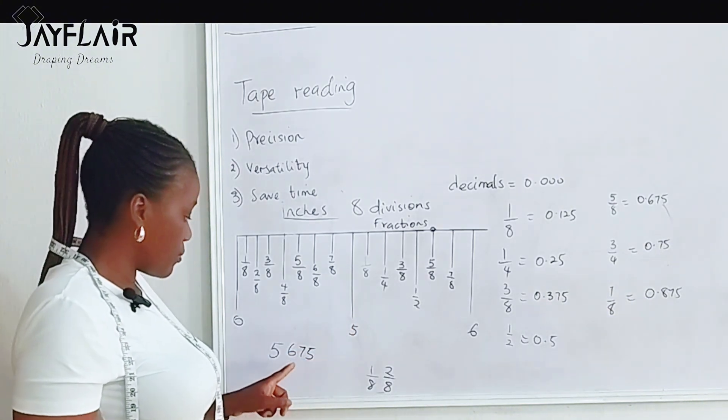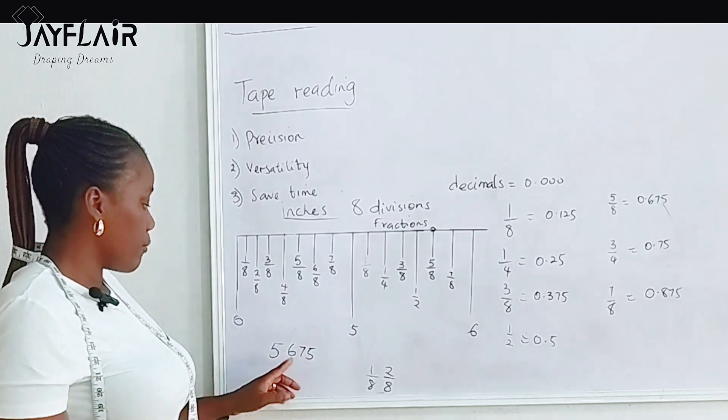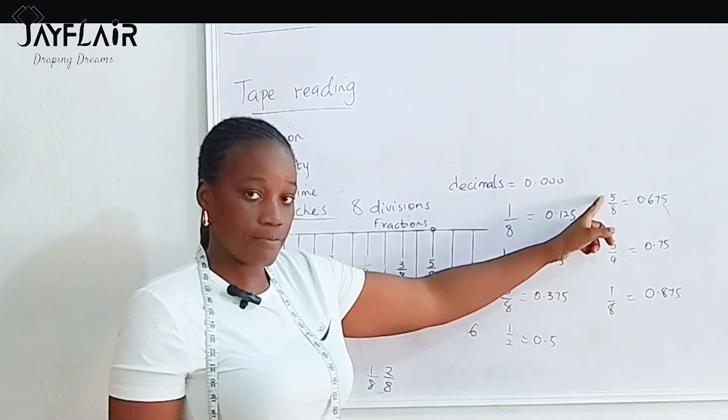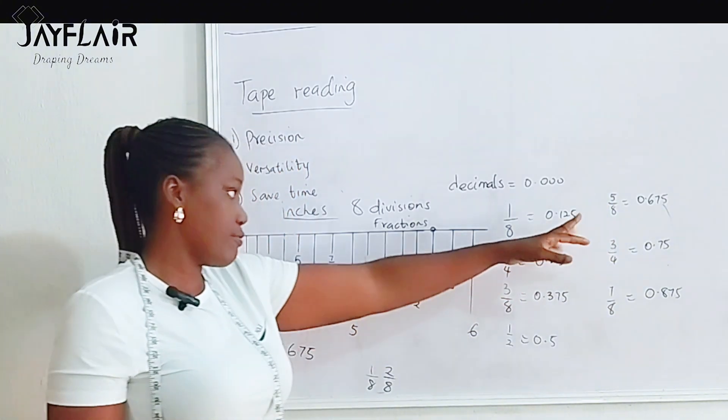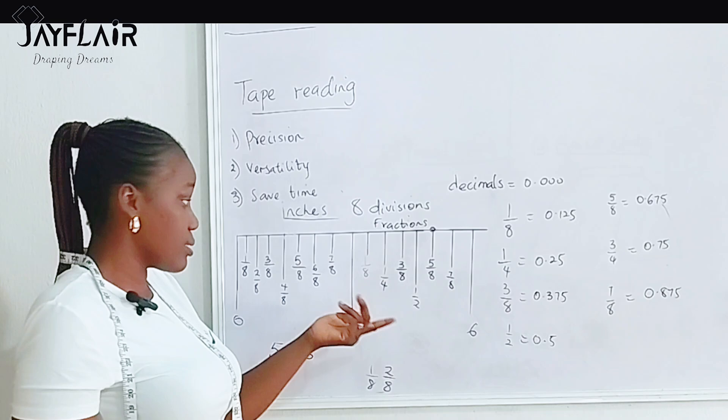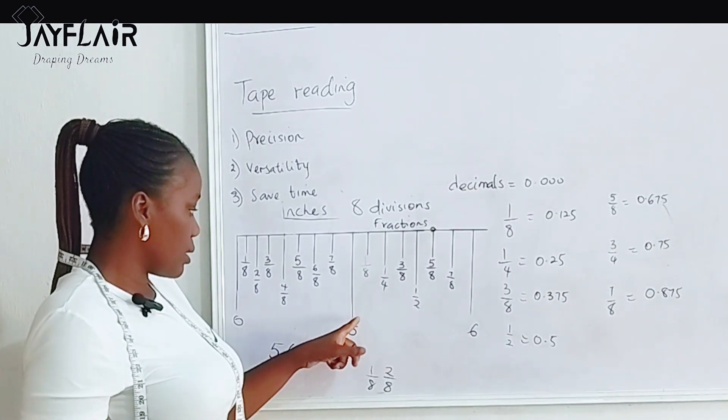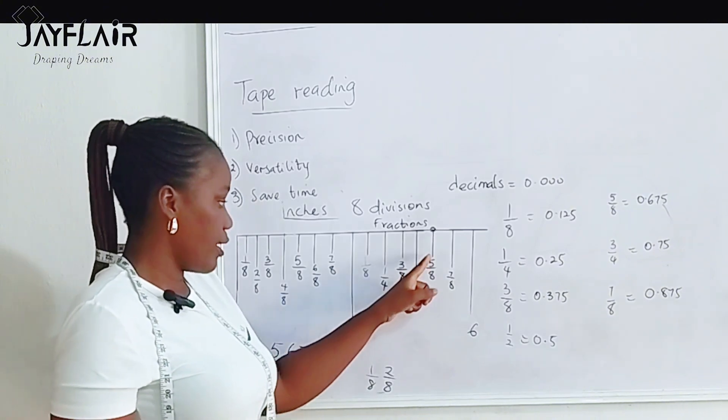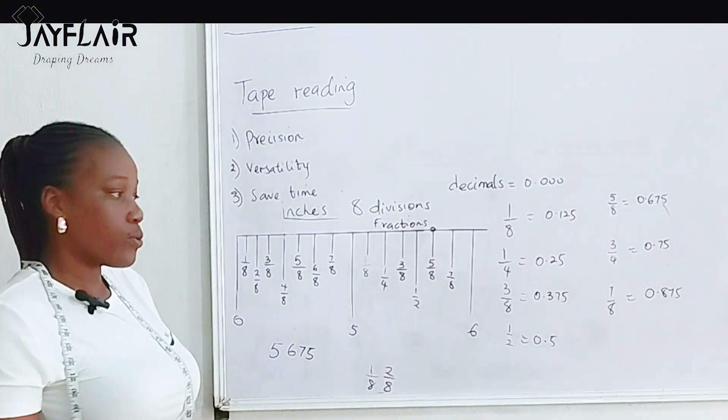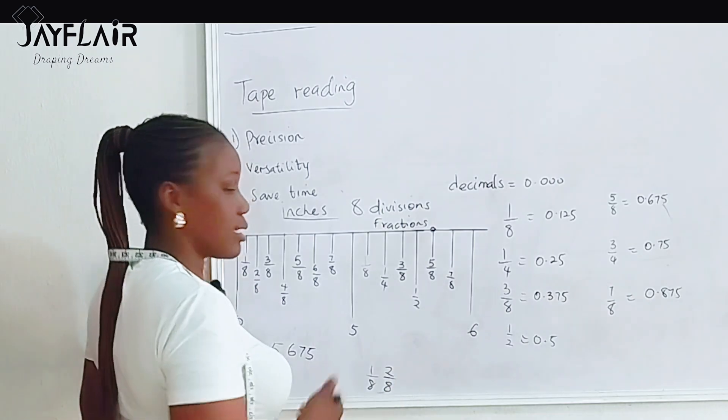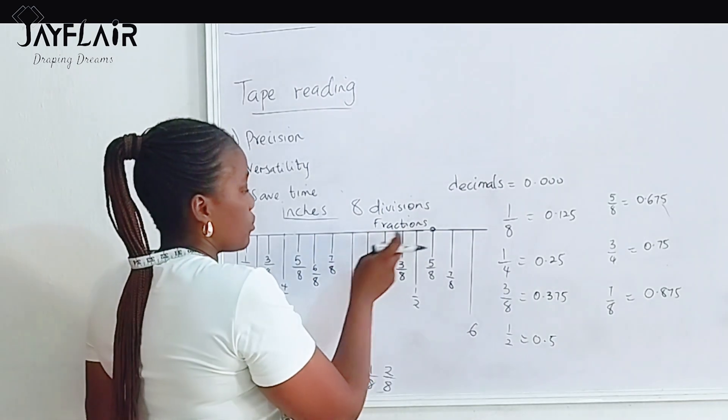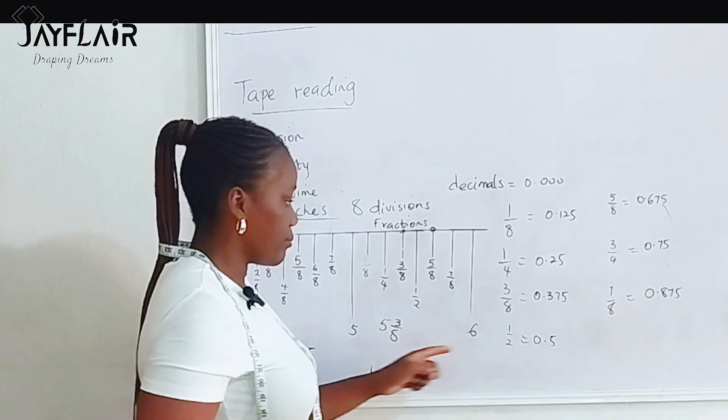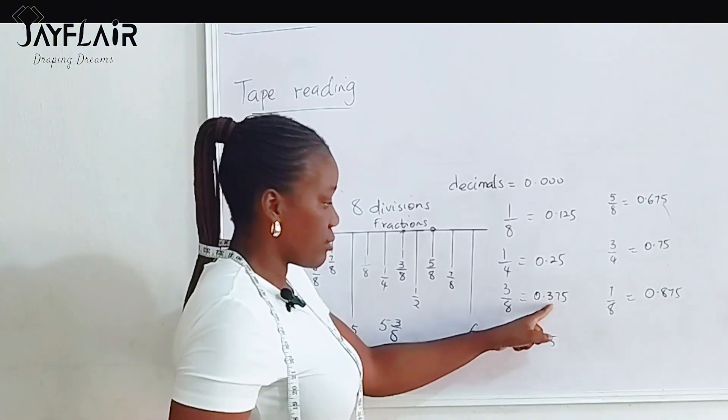So you just come to five. Now if you know that 5.675 is 5, 5 over 8, or 5, 5, 8, you will be able to locate it easily on the measuring tape. And how do you get it? One, two, three, four, five. This is 5, 5 over 8. So anytime you want to read a measuring tape, just count. One, two, three. This is 5, 3 over 8, which is 5.375.